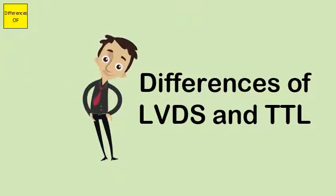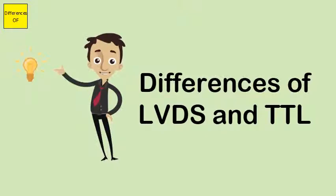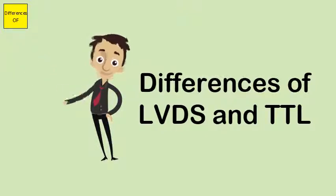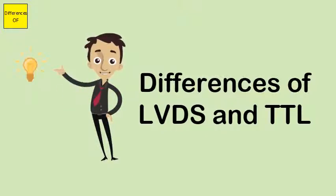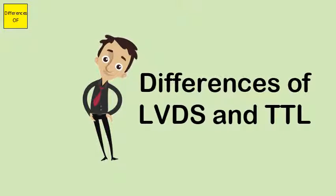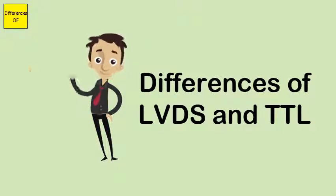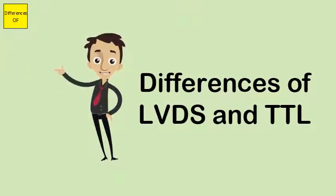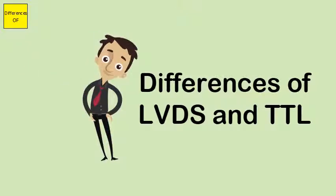With TTL, a voltage spike while transmitting a 0 may erroneously result in a 1 at the receiver. LVDS enables devices to utilize longer wires, while TTL restricts the length of wires.